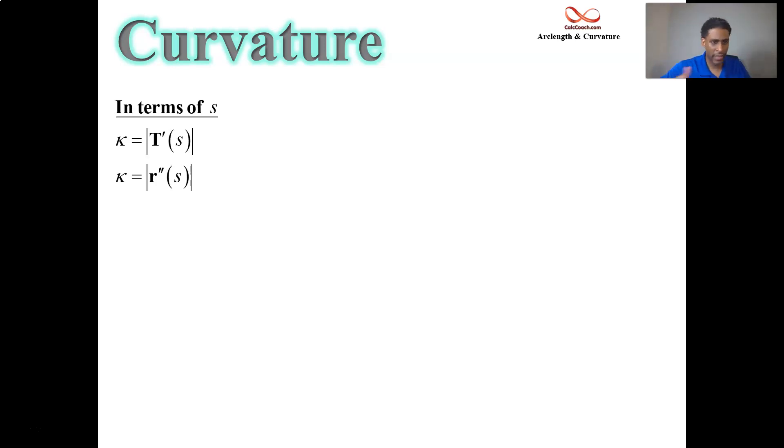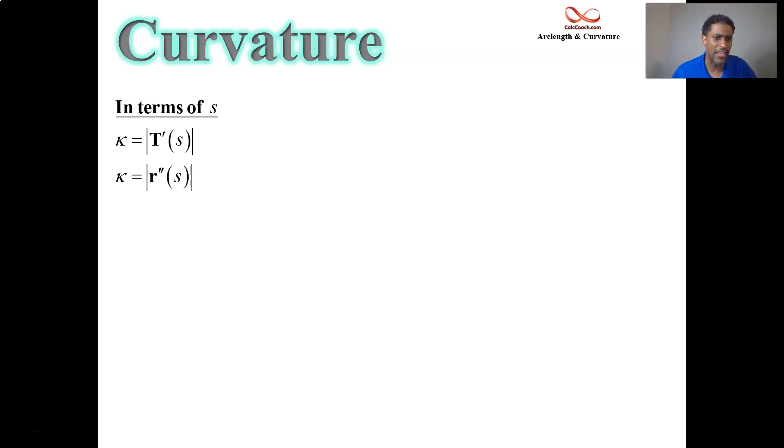And so we went through a series of different simplifications. And the goal in mind is that having the arc length parameter s is sometimes impossible, if not really difficult, when you're given a function in terms of t. And so we then developed a formula for calculating curvature in terms of time, t. And the one that's in red there is your go-to formula, velocity cross acceleration, the magnitude of that, divided by speed cubed.